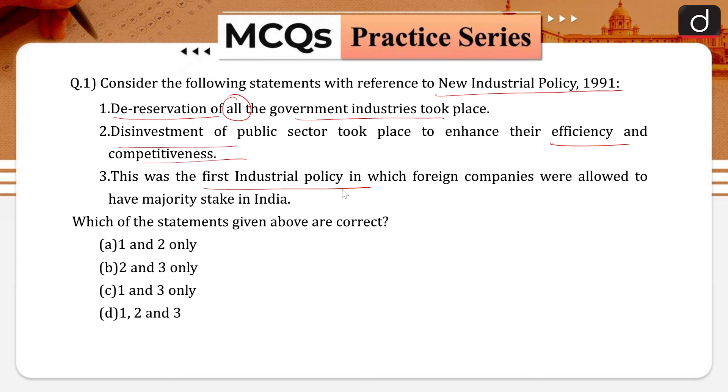Which of the statements given above are correct? One and two only, two and three only, one and three only, or one, two and three.